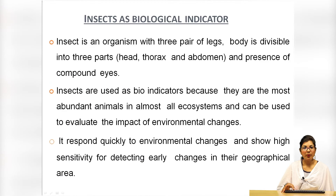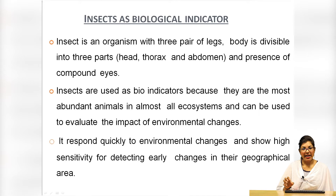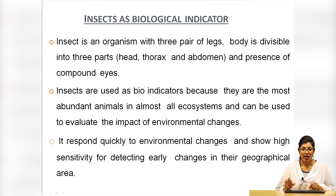Now, how and why are insects known as biological indicators? Insects are organisms with three pairs of legs, a body divided into head, thorax and abdomen, and compound eyes. Insects are used as bioindicators because they are the most abundant animals in almost all ecosystems and can be used to assess the impact of environmental changes. They respond very quickly to environmental changes and show high sensitivity for detecting early changes in a geographical area.